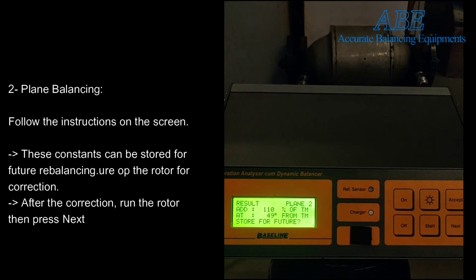In this case, for plane 2, the instrument is indicating that you need to add a weight that is 110% of the trial mass, and it is to be added at a position in the increasing direction, 49 degrees from the trial mass.